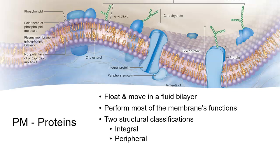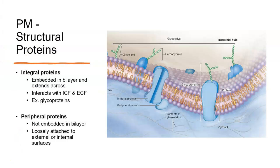Integral proteins are sometimes called transmembrane proteins — trans means across — so they run all the way across the membrane, inside, outside, and all the way through. Periphery means on the side or the edge, so peripheral proteins are only found on the inside or just on the outside of the cell membrane. You can see in the image a transmembrane or integral protein, an integral protein, and a peripheral protein. You can also see the glycocalyx formed by the sugars attached to the lipids or proteins on the outside of the cell membrane.